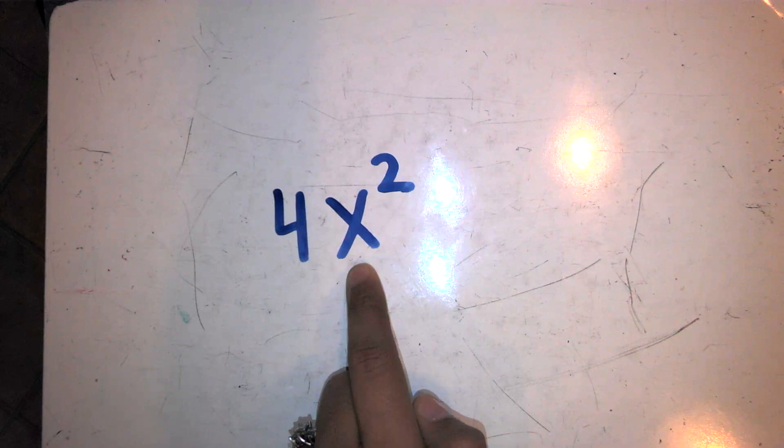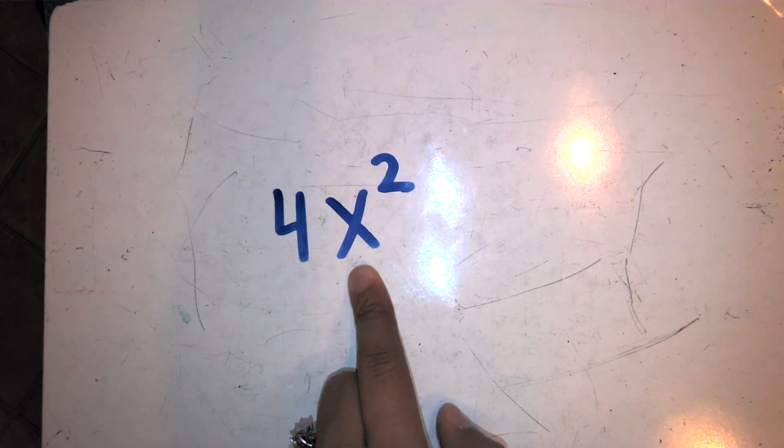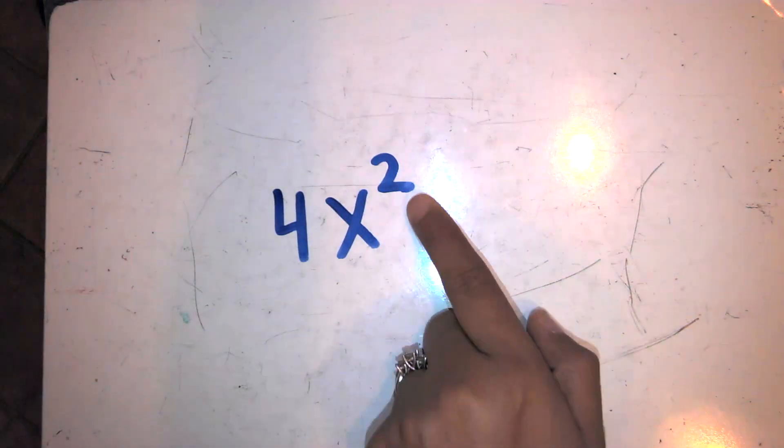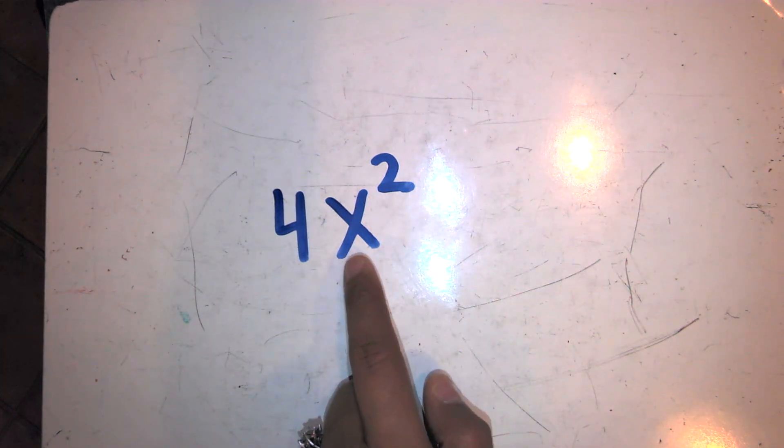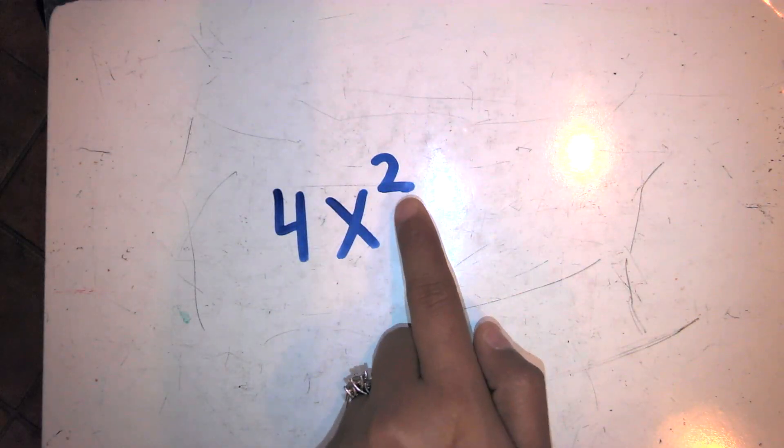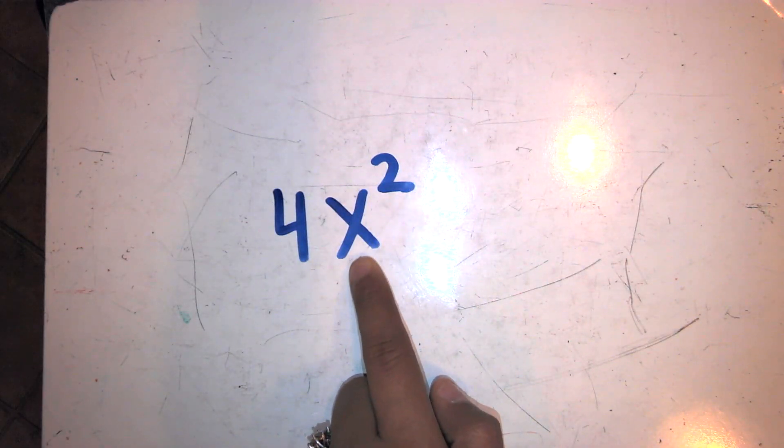Typically you'll see x and y in algebra, but you can use almost all letters. The superscript, the little number on top, represents the exponent. So in this case, it's 4 times x to the second power. The second refers to the base x.